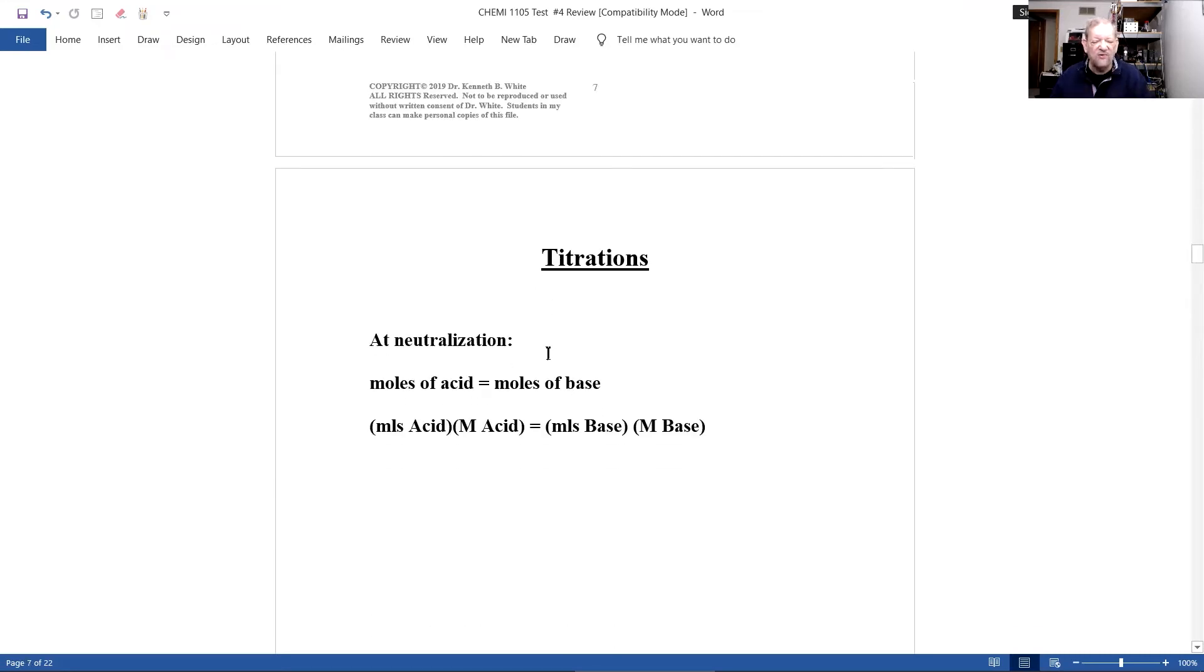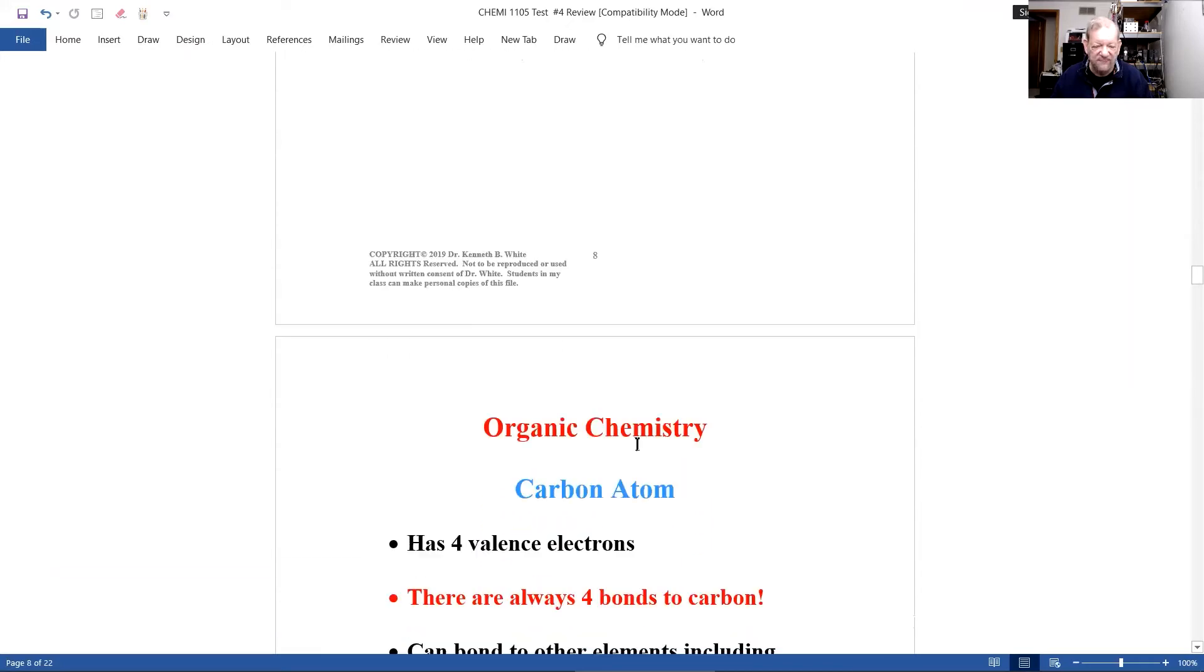All right. In titration, at neutralization, when the indicator changes, moles of acid equals moles of base. And because of that, here's for monoprotic acids, which all I'll ever give to you, and bases, you have milliliters of acid times molarity of acid equals milliliters of base times molarity of base. And you're going to be given three of these, like milliliters of acid, milliliters of base, molarity of base. And you'll have to calculate the molarity of acid. And we went through this. Look at the problem set. Here, if I gave you milliliters of acid, molarity of acid, milliliters of base, you'd solve for base molarity. And we've done that.